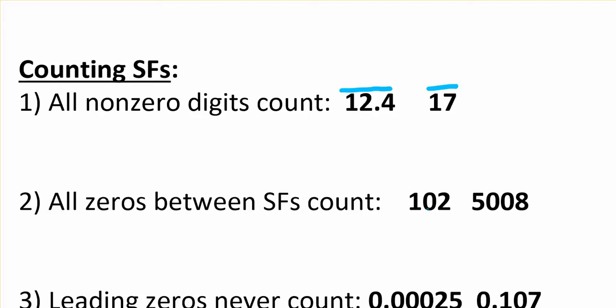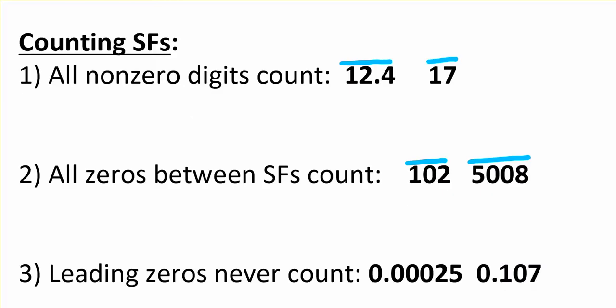Zeros that are sandwiched count. So all of these count as significant figures. It doesn't matter here that there's more than one that's sandwiched. However many are sandwiched in there, they count.